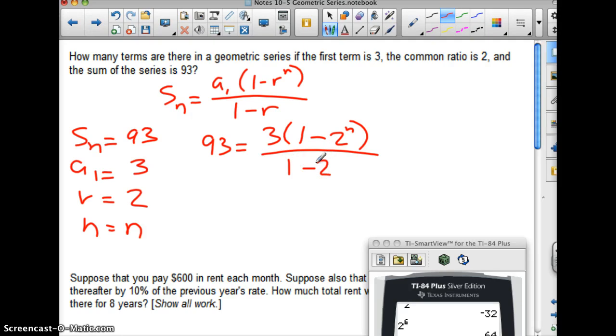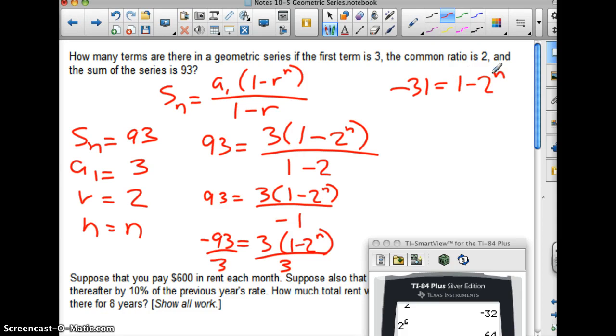Now that's going to be negative 1. So 93 equals 3 times 1 minus 2 to the n all over negative 1. I'm going to multiply both sides by negative 1 here to get rid of that fraction. Because what I'm trying to do is get the weirdest looking part of the problem alone. And I'm going to divide both sides by 3 here. And you get negative 31 equals 1 minus 2 to the n.